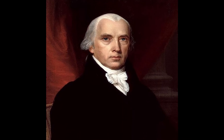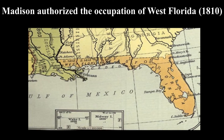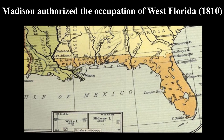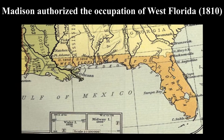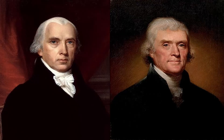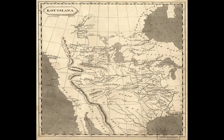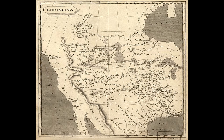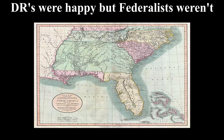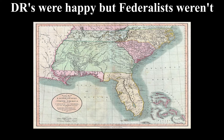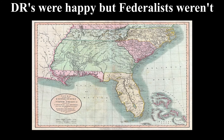While all of this occurred, a lot of things happened — like the occupation of Western Florida by Madison. Both Madison and Jefferson saw it as rightfully American, believing it was part of the Louisiana Purchase. Democratic Republicans were happy with this acquisition, but Federalists thought it was unconstitutional.